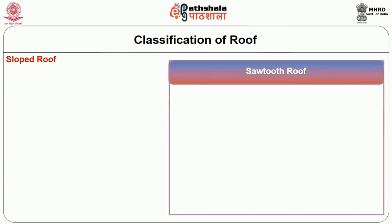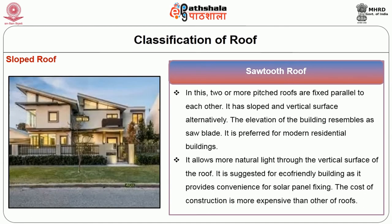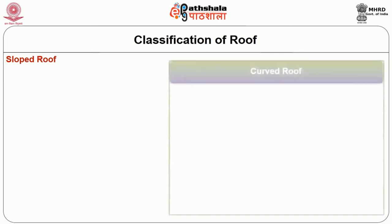Saw tooth roof: two or more pitched roofs are fixed parallel to each other with sloped and vertical surfaces alternating. The elevation of the building resembles a saw blade. It is preferred for modern residential buildings, allows more natural light through the vertical surface, and is suitable for eco-friendly buildings as it provides convenience for solar panel fixing. The cost of construction is more expensive than other types of roof.